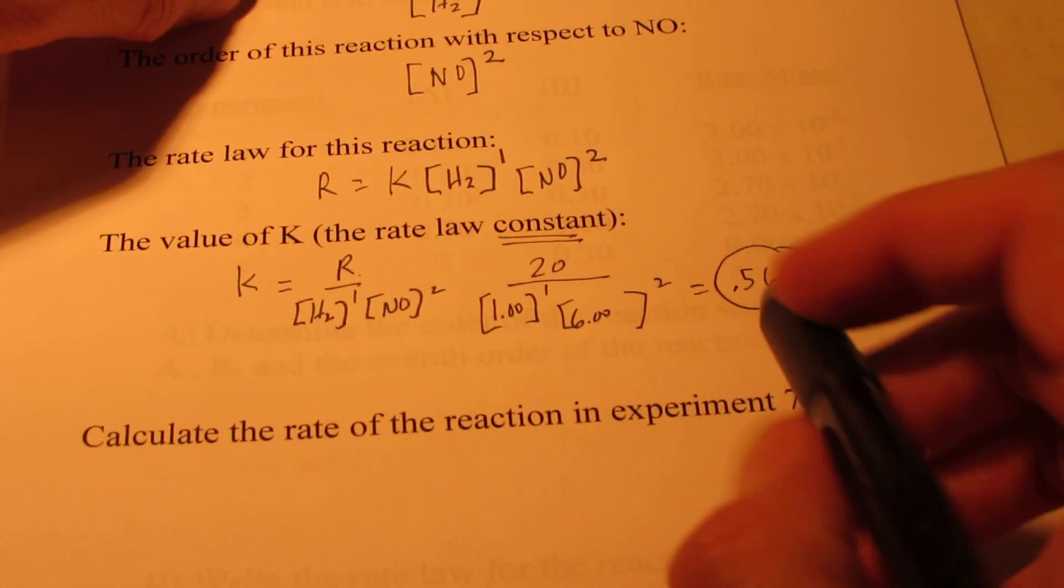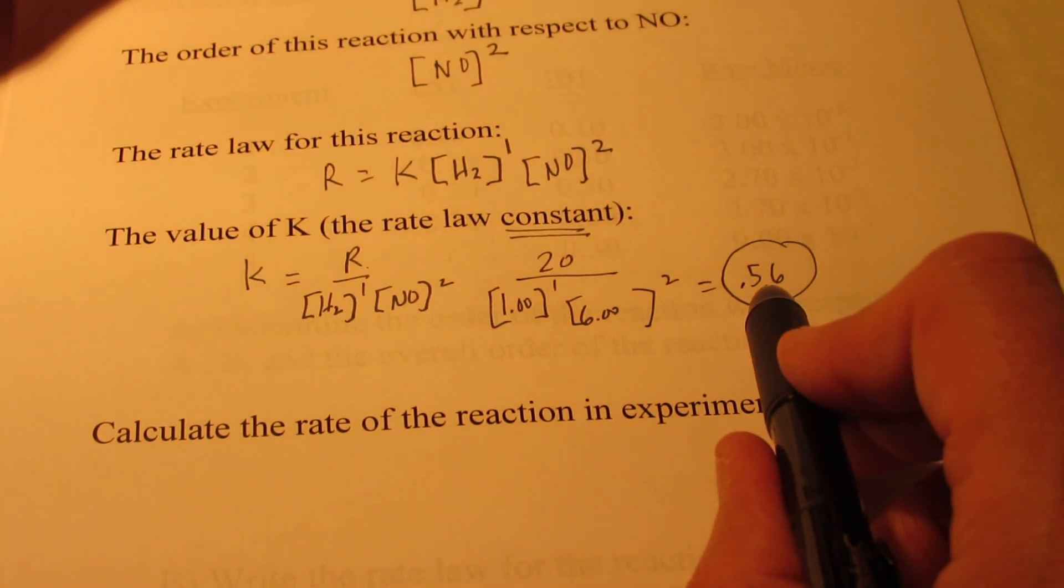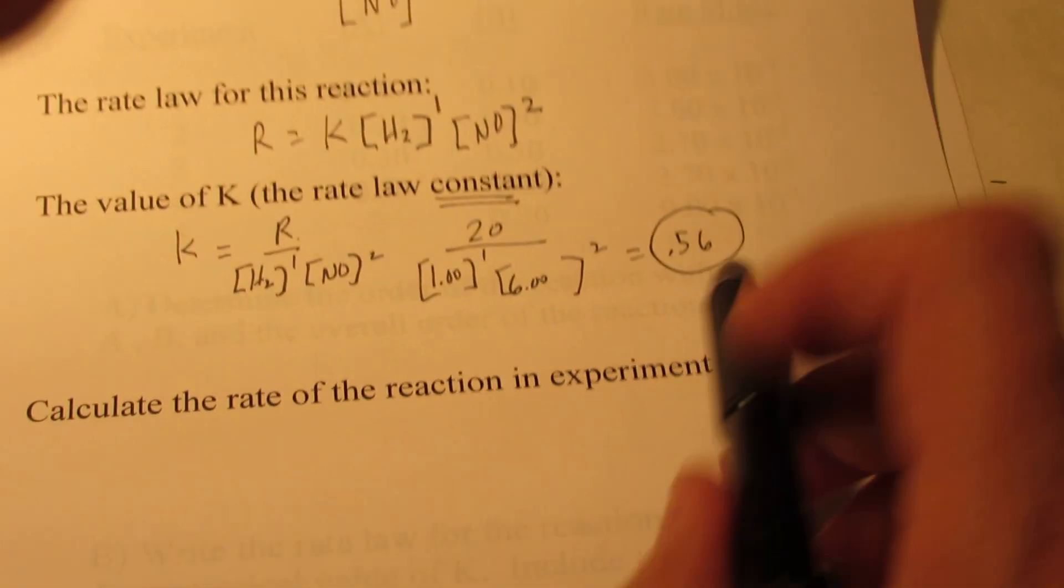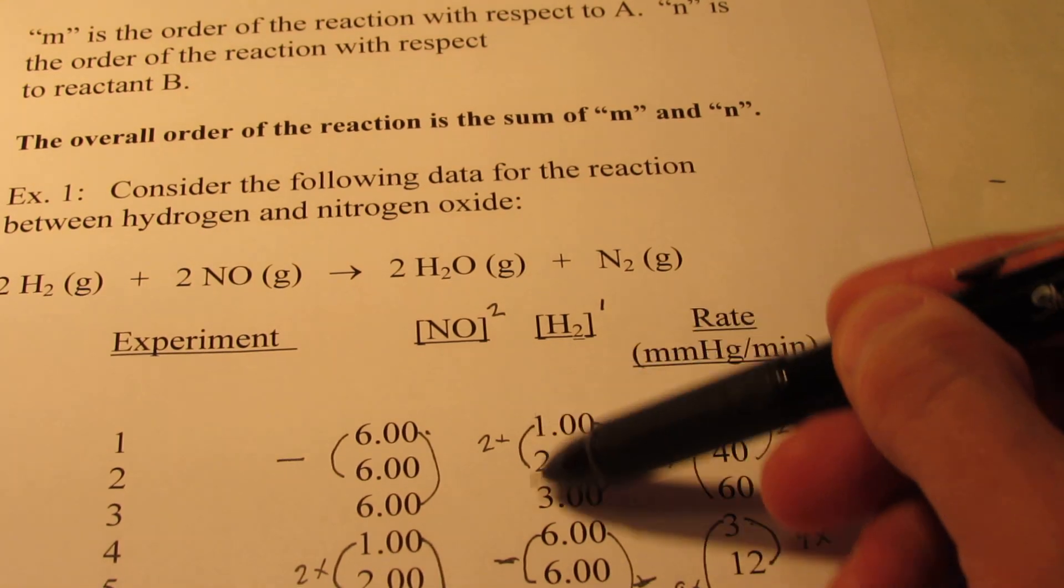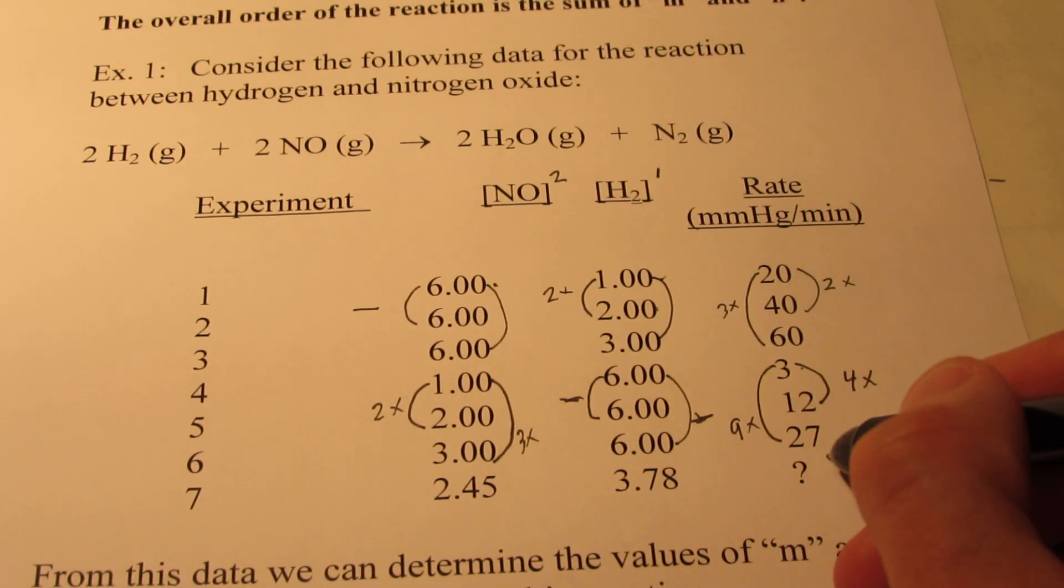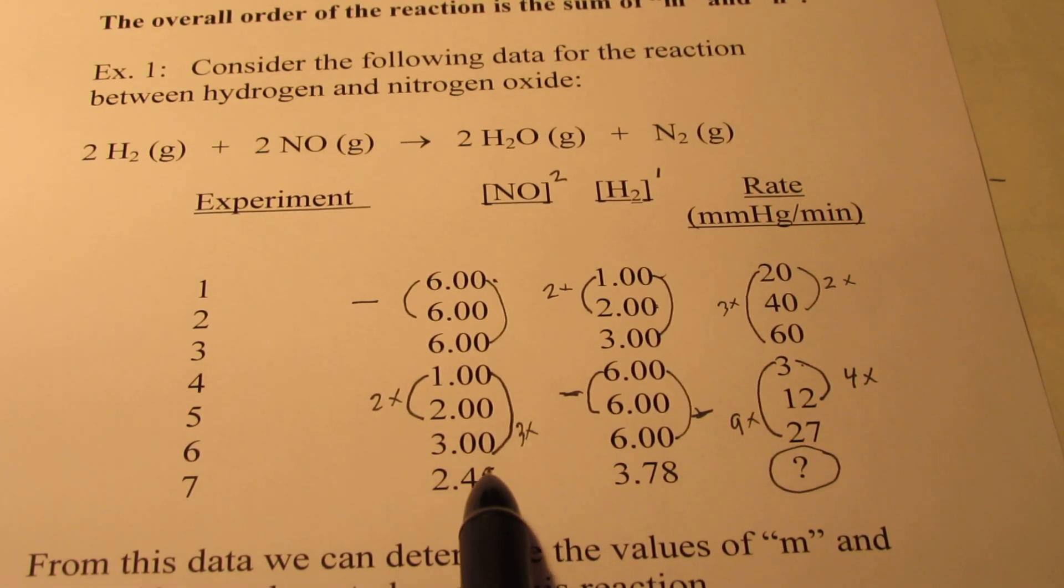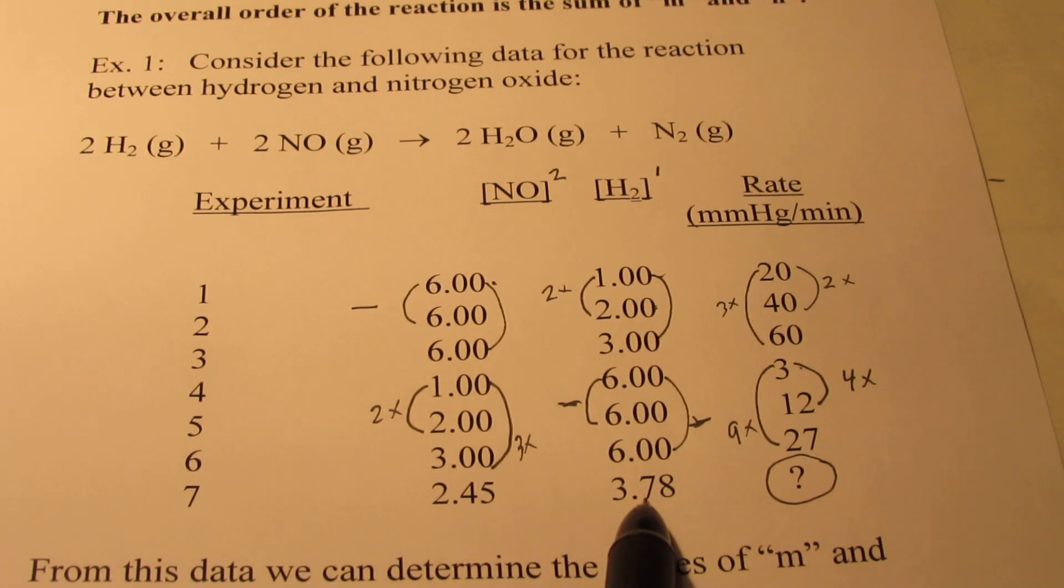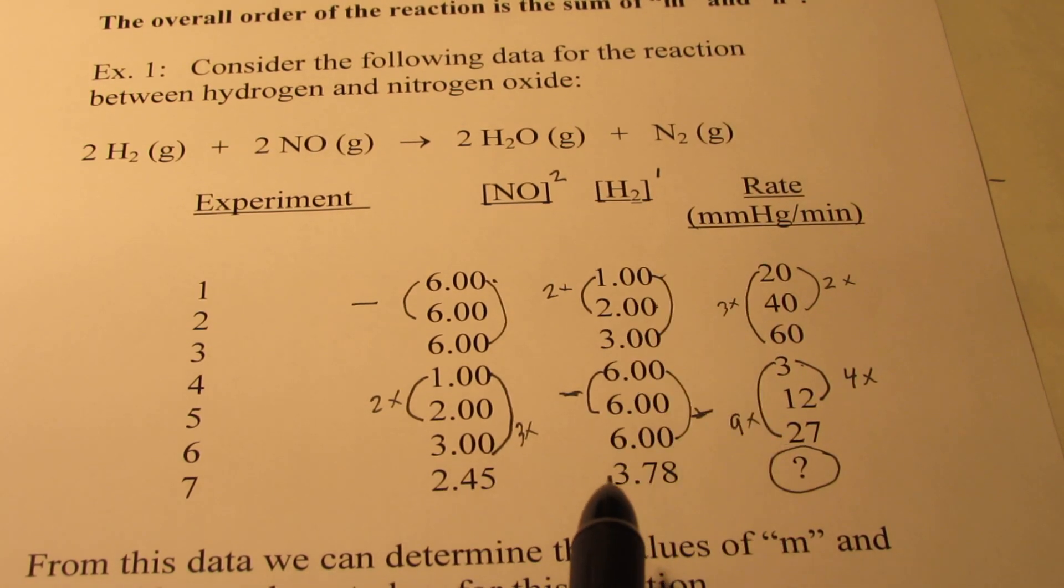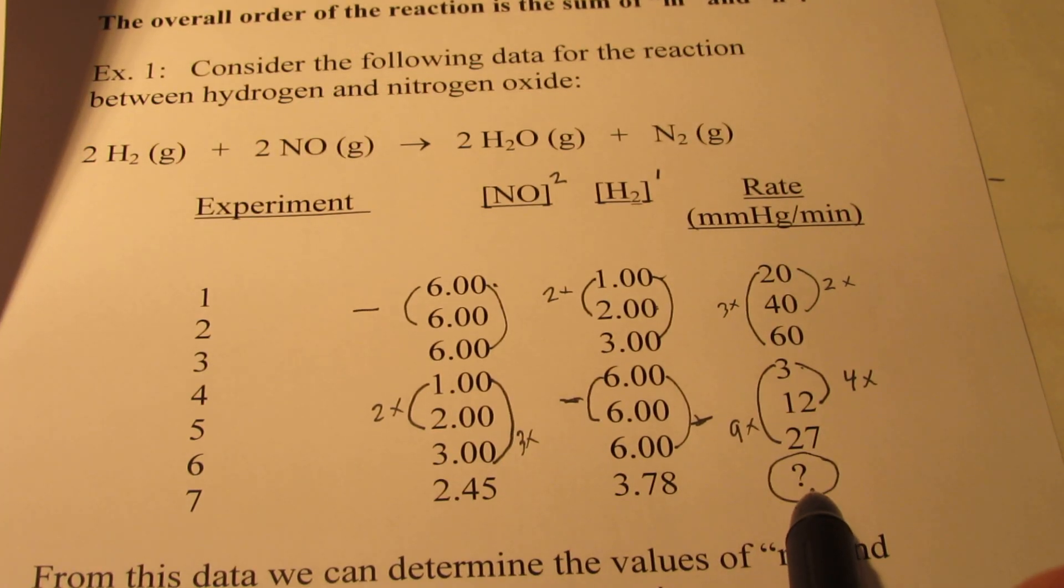That's my rate constant. Now for right now we're going to leave that unitless. Later on we'll attach a unit to it. Now that we know the rate constant, that rate constant should be good for any of these experiments, including experiment 7, where I don't know the rate of the reaction. So let's use our rate law and these concentrations of NO and H2 and our rate constant, which we just calculated, to find the rate during experiment number 7.